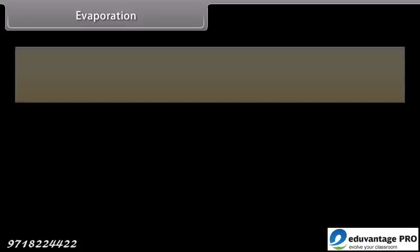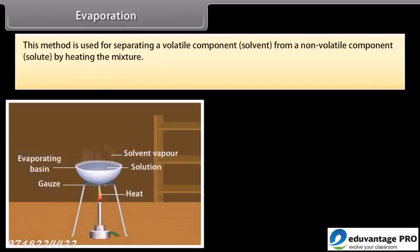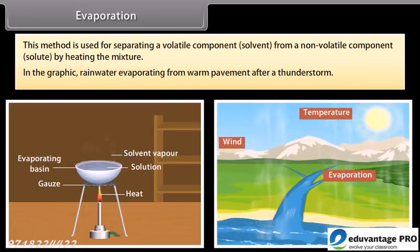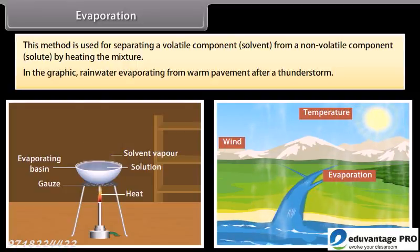Evaporation: This method is used for separating a volatile component (solvent) from a non-volatile component (solute) by heating the mixture. An everyday example is rainwater evaporating from warm pavement after a thunderstorm.